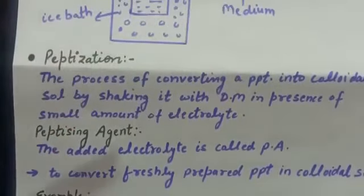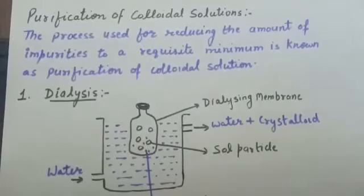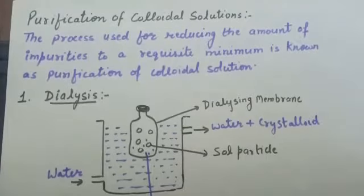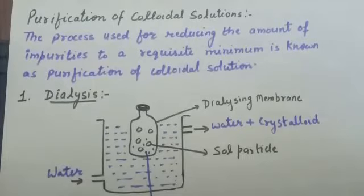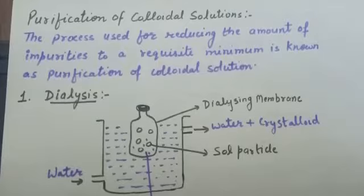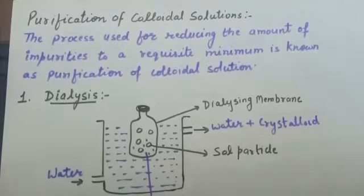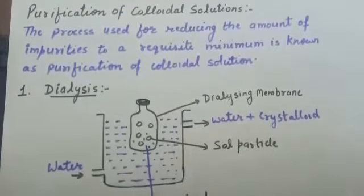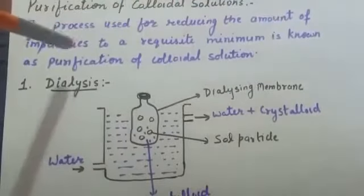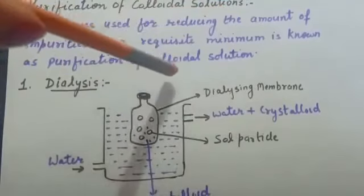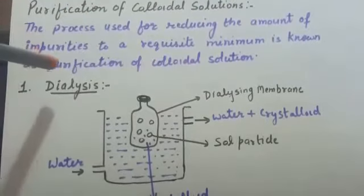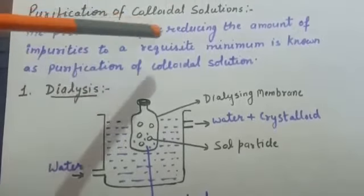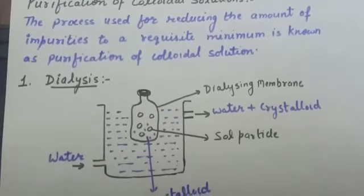Next topic is purification of colloidal solution. When a colloidal solution is prepared, it generally contains excessive amounts of electrolytes and other soluble impurities. While a trace amount of electrolyte is essential for the stability of the colloidal solution, it is necessary to reduce the concentration of soluble impurities to a requisite minimum. The process used for this is known as purification of colloidal solution.